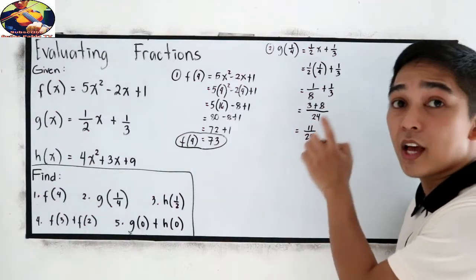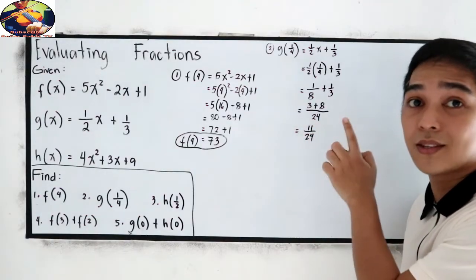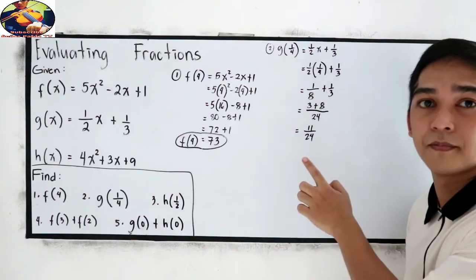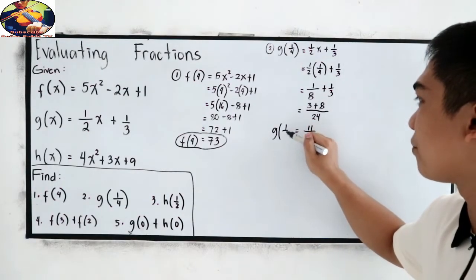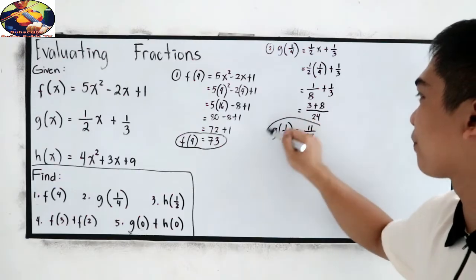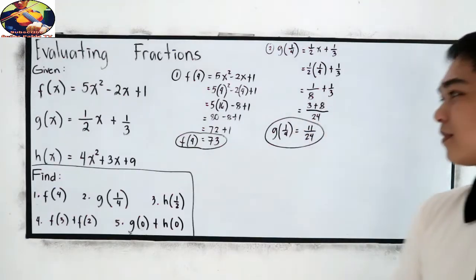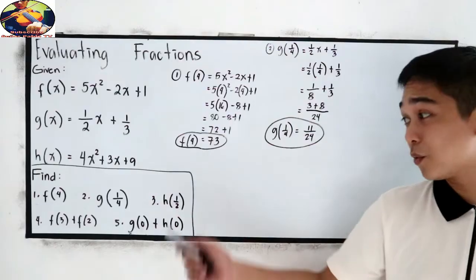Please make sure that you write your final answer in the lowest term. So, that is g of 1 fourth. Okay. Are you ready with number 3?